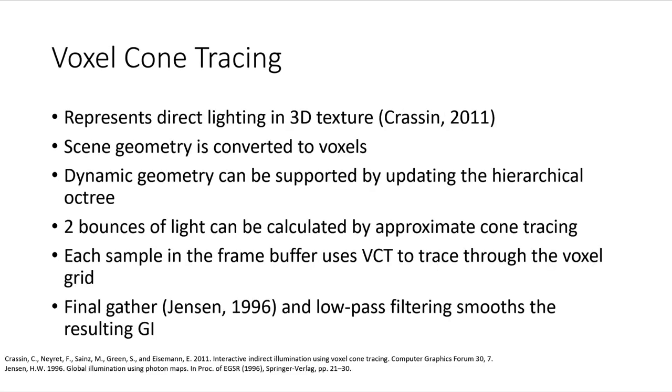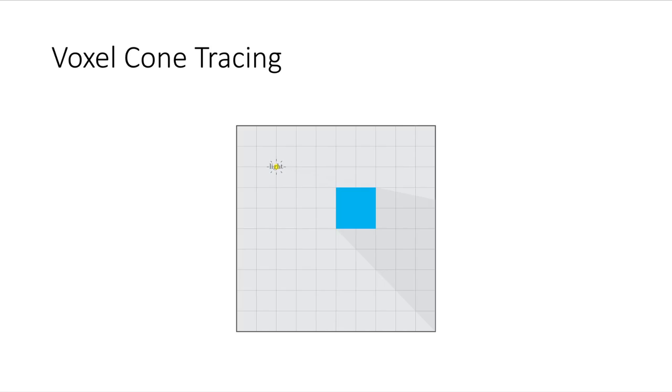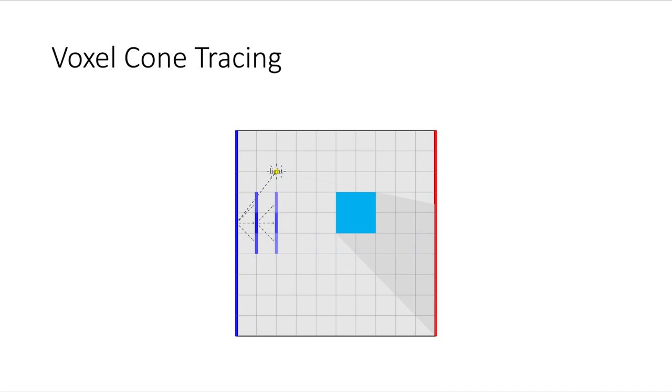So let's start with voxel cone tracing. This method requires the scene geometry to be voxelized to a sparse octree. Dynamic geometry can be added to the octree in every frame. Then we cone trace direct light into the voxel structure. When we light a surface, we use final gathering using cone tracing through the octree. Let's take a look at an example. We voxelize the scene and then we cone trace direct illumination into the octree. Each voxel stores global illumination information about its local volume. Then when shading surfaces, we cone trace into the voxel grid to perform final gathering.